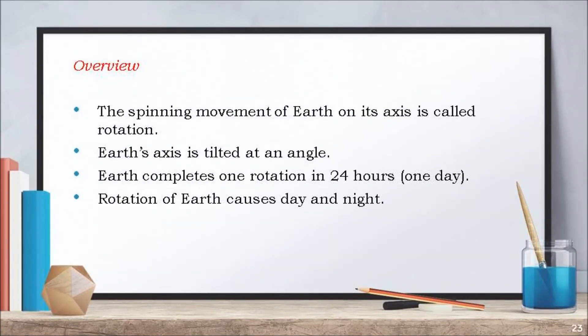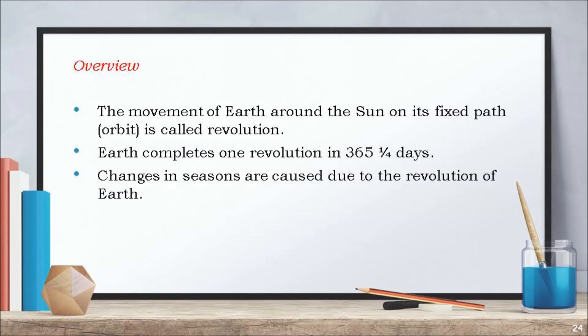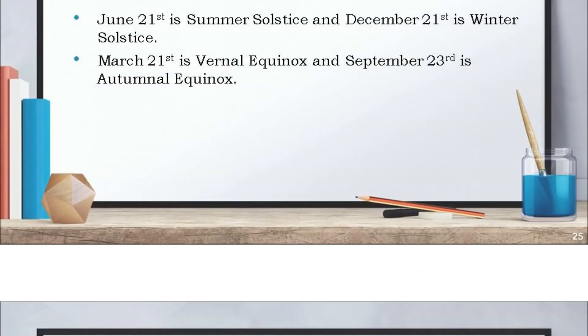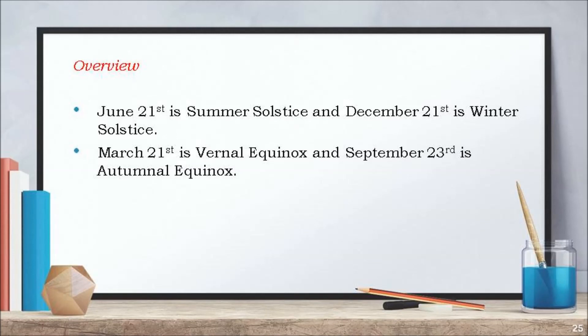Now an overview of what we have learnt. The spinning movement of earth on its axis is called rotation. The axis of earth is tilted at an angle. Earth completes one rotation in 24 hours, and rotation of earth causes days and nights. The movement of earth around the sun on its fixed path is called revolution. Earth completes one revolution in 365 days and one-fourth a day. Changes in seasons are caused due to revolution of earth around the sun. June 21st is summer solstice and December 21st is winter solstice. March 21st is vernal equinox and September 23rd is autumnal equinox.